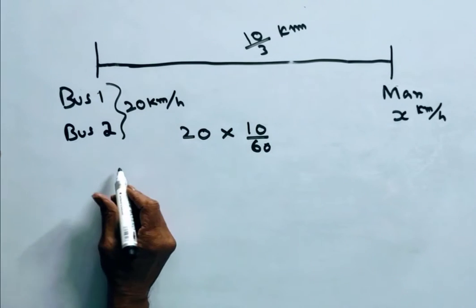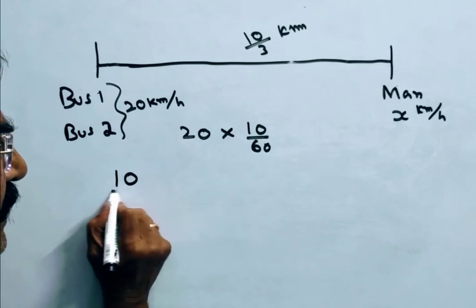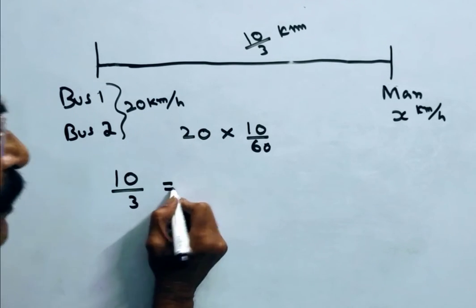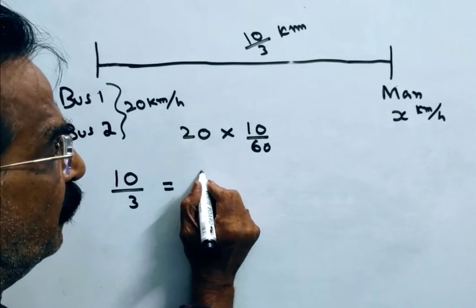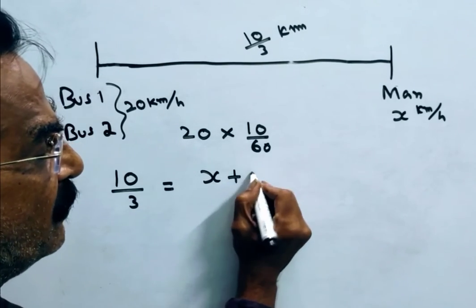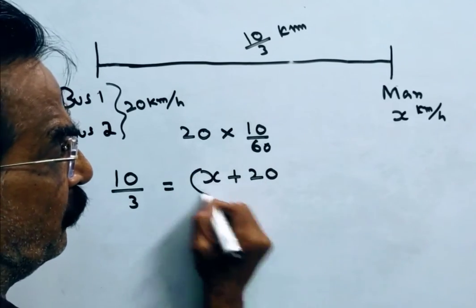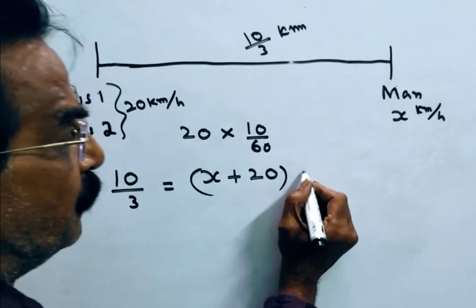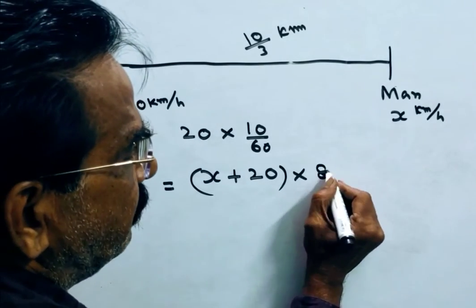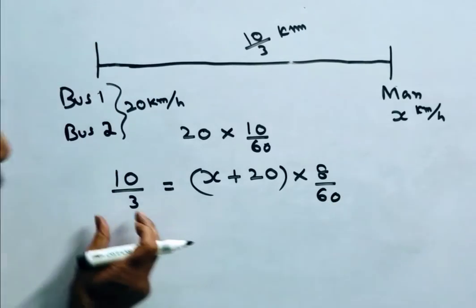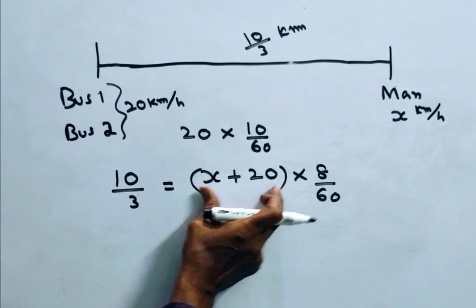See, now the distance, middle distance is equal to velocity into time. Velocity means relative velocity - man velocity x, bus velocity 20. The man meets the bus after 8 minutes only, so 8 by 60. Distance is equal to relative velocity into time.